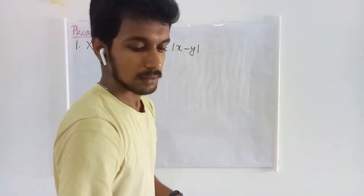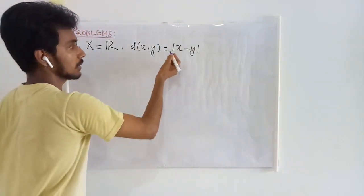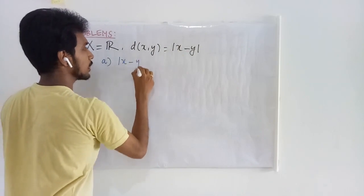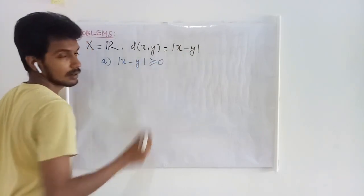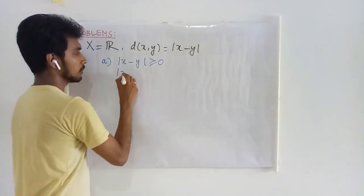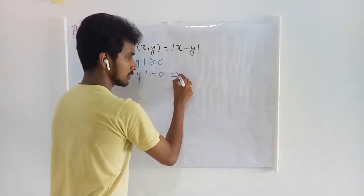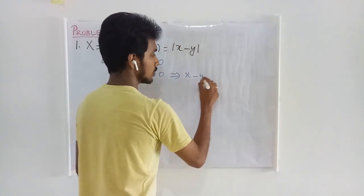And here, easily from the definition of the absolute value, what we have? Absolute of x minus y is always non-negative. Let me take absolute of x minus y to be 0. Then this tells me that x minus y is 0. This is the only possibility.